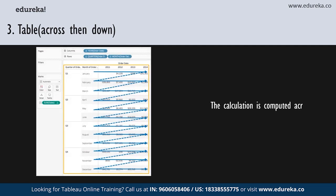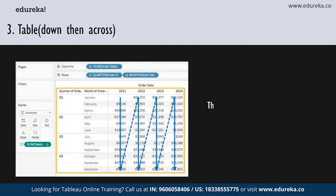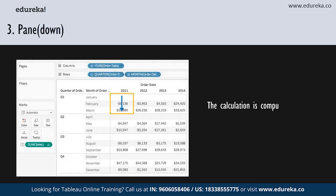Next we have across then down. As the name suggests, this table calculation happens across the length of the table and then down. The calculation is computed across the year column and then down a row, and then across the columns again for the entire table — here your partition is basically your entire table. Similarly, we have down then across, where the calculation goes down the length of the table and then across. Then you have something known as a pane, where the calculation goes down an entire pane in the table.